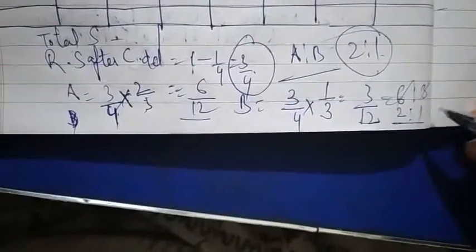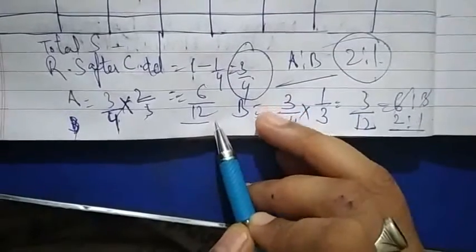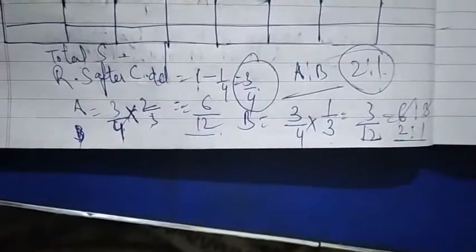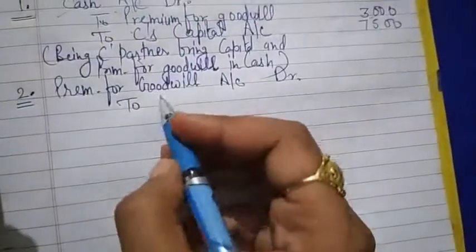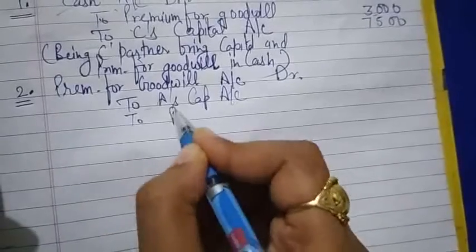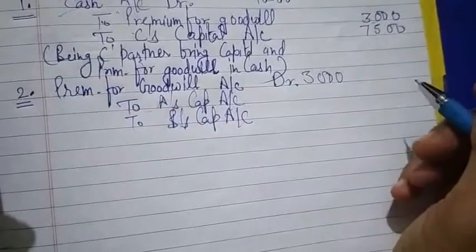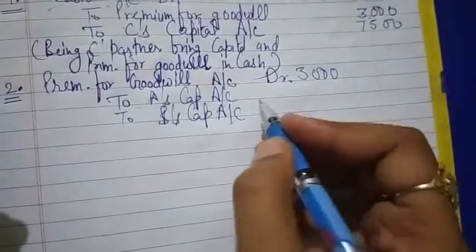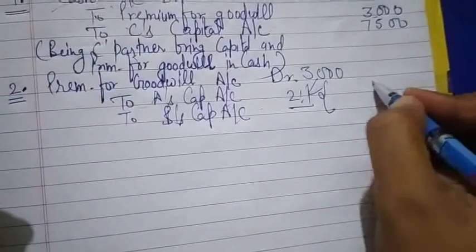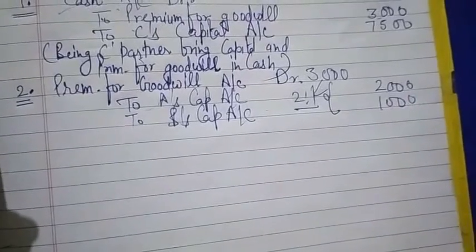Since the new ratio is also the same 2:1, there is no change in sacrificing ratio. The sacrificing ratio equals the old ratio, so no separate calculation is needed. Therefore: Premium for goodwill account debit to A's capital account and B's capital account. C brought ₹3,000 as premium for goodwill. Dividing in 2:1 ratio: A gets ₹2,000 and B gets ₹1,000.